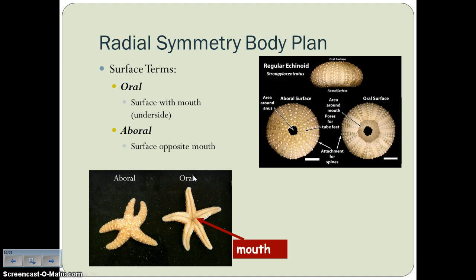Animals with radial symmetry have two surfaces. The oral surface — like oral surgery is surgery on your mouth — is the surface with the mouth, typically the underside of the animal. Like the starfish, you find the mouth on the underside, which it crawls along hoping to bump into something to eat. The aboral surface is the surface opposite the mouth — in the case of the starfish, that would be the top side.